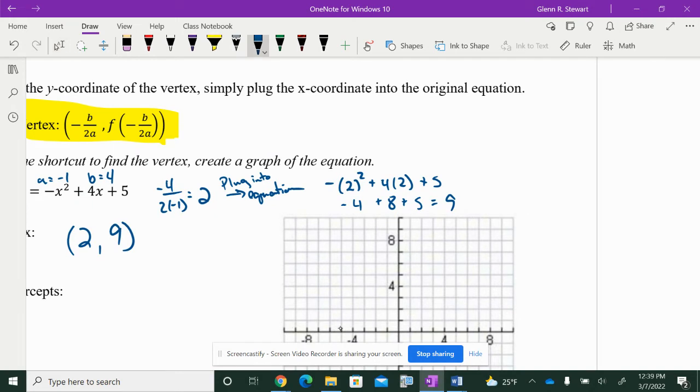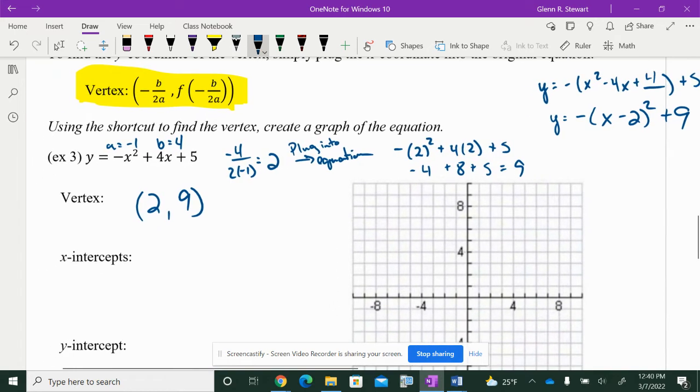I did completing the square, I just got to show you off to the side. Take out the negative, put my blank, and then subtract my blank. This would be 4. This would be y is equal to negative, and then x minus 2 squared. And, I have to multiply this by negative 1 because I pulled out that negative. So, then that becomes 9, which gives me my vertex of 2, 9.